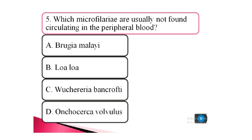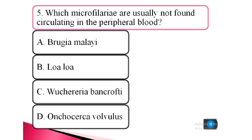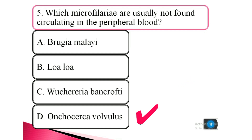Question 5. Which microfilaria are usually not found circulating in the peripheral blood? a. Brugia malayi, b. Loa loa, c. Mansonella ozzardi, d. Onchocerca volvulus. The answer is d. Onchocerca volvulus.